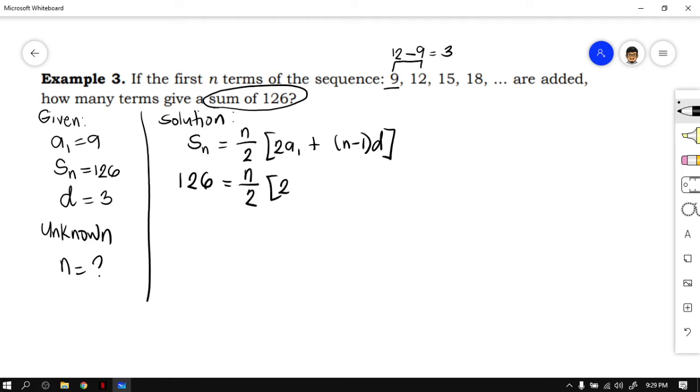Over 2, quantity 2 times a sub 1 is 9, plus n is still missing, minus 1, times the common difference, which is 3.